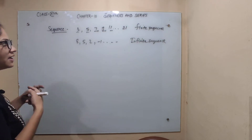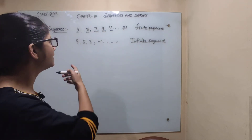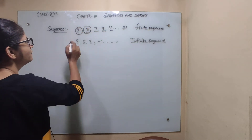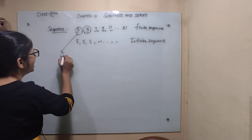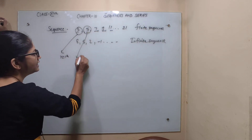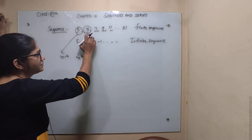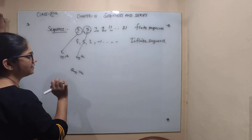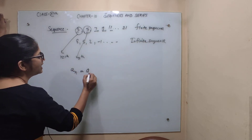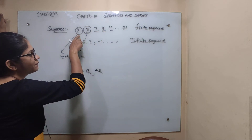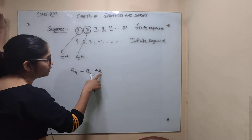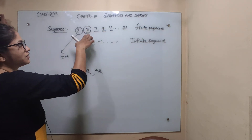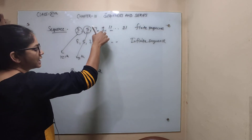A set of numbers arranged in a definite order according to some definite rule is called a sequence. Now here, if this is the (n-1)th term and the next is the nth term, then the nth term a_n equals a_{n-1} plus 2. If you add 2 to the previous term, you get the next term — for example, 5 plus 2 gives 7, 7 plus 2 gives 9, and so on.